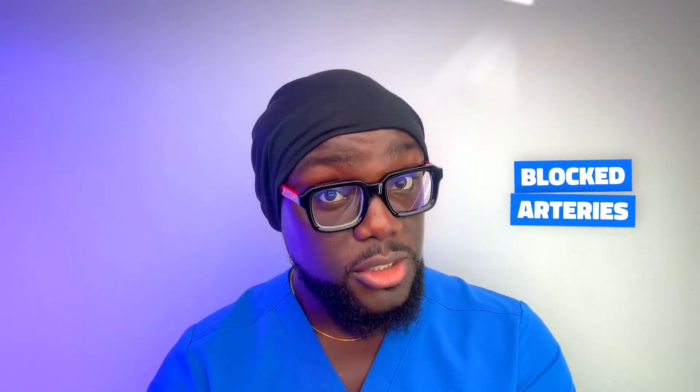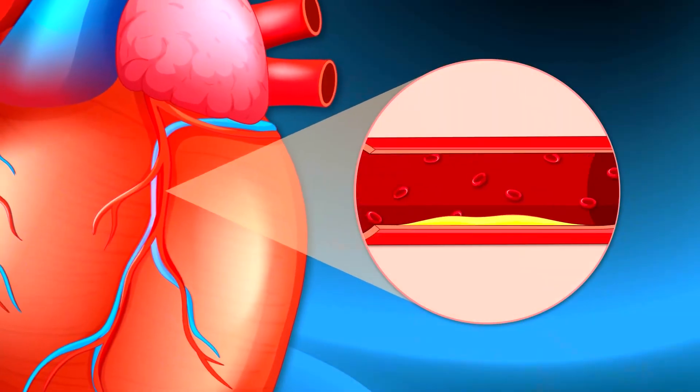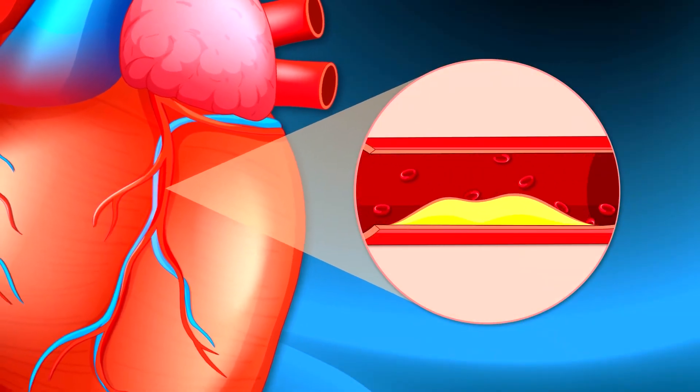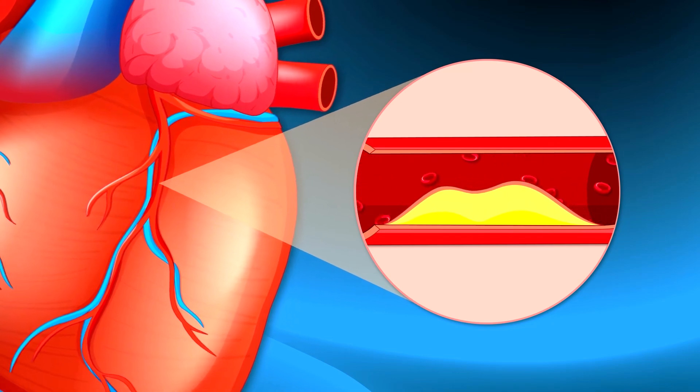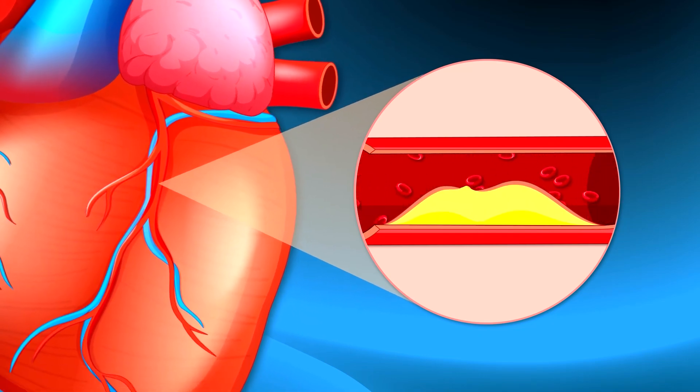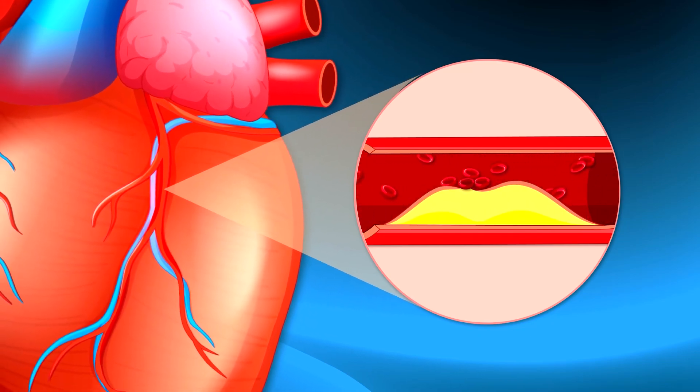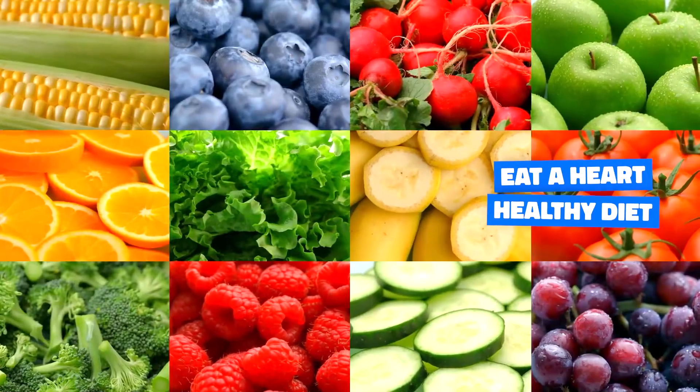The second on my list is heart attack. The number one cause of heart attacks is blocked arteries — blocked by plaque build-up. When you eat a lot of unhealthy foods, plaque may start to build up in the arteries and ultimately block blood supply. To reduce your risk, number one: eat a heart-healthy diet.